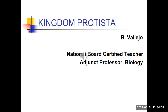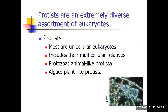The Protista are an extremely diverse assortment of eukaryotes, but they all share a common thread: they are unicellular eukaryotes — for the most part. They also include multicellular relatives. There are some plant-like organisms with pigments very similar to those in single-celled algae. The general consensus is that seaweed belongs with the Protista more properly.